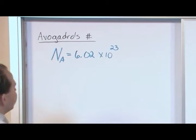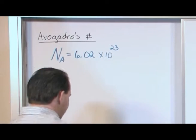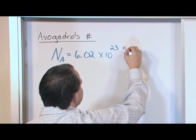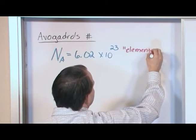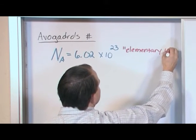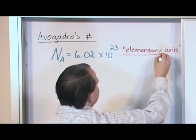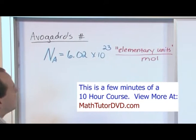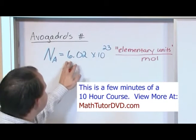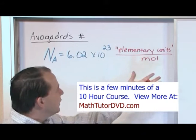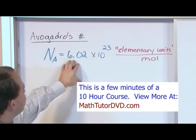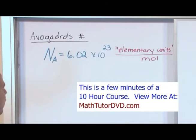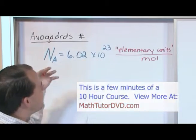Now, this is a big number, 6.02 times 10 to the 23rd. What? What it means is, and I'm going to change colors to write the units and I'm going to put it in quotes: elementary units per mole. So what it is, is defining what a mole is. One mole of something is 6.02 times 10 to the 23rd elementary units. Avogadro's number is 6.02 times 10 to the 23rd elementary units per mole. So one mole of something is always going to contain this many things.